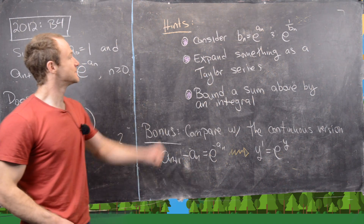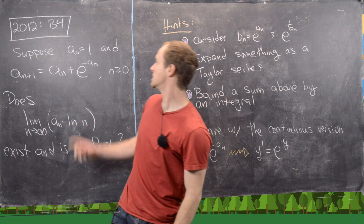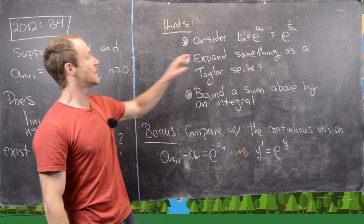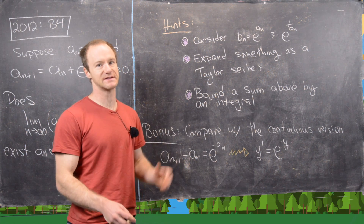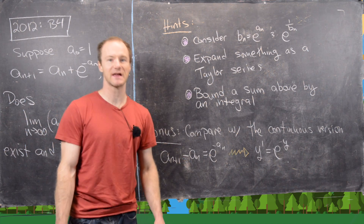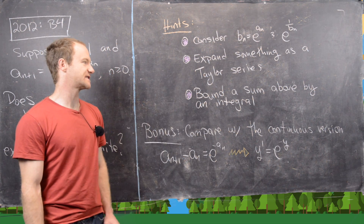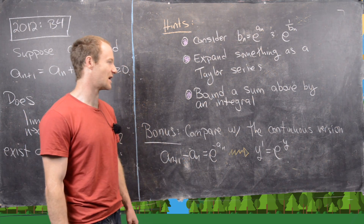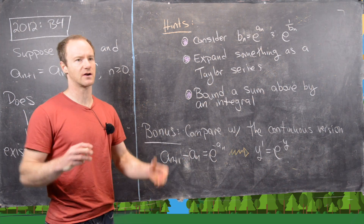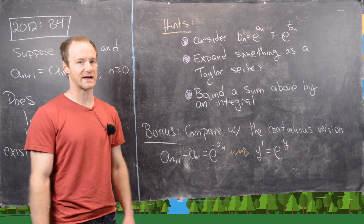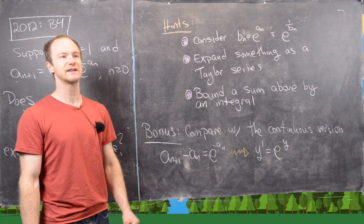Here are some hints. First, consider a companion sequence b_n = e^{a_n}, motivated by the exponential in the recursion. Along that journey you'll also arrive at e^{−1/b_n}. Next, expand something as a Taylor series to start a chain of inequalities. An important step is to bound part of the inequality containing a sum by an integral — using the fact that for a decreasing function, the Riemann sum with left or right endpoints is bigger or smaller than the corresponding integral.